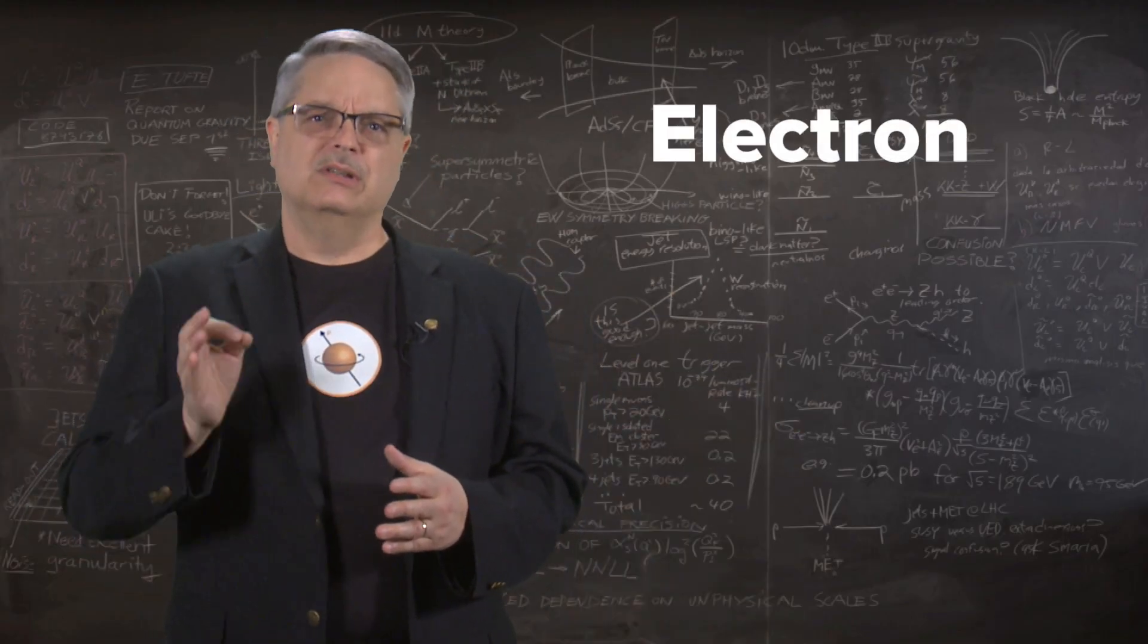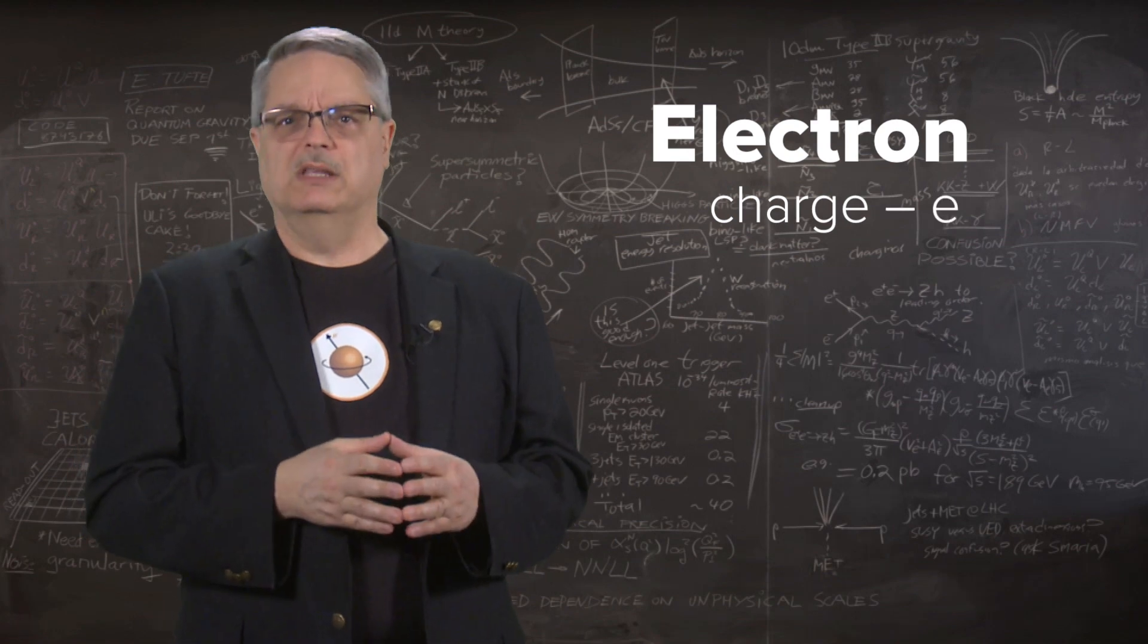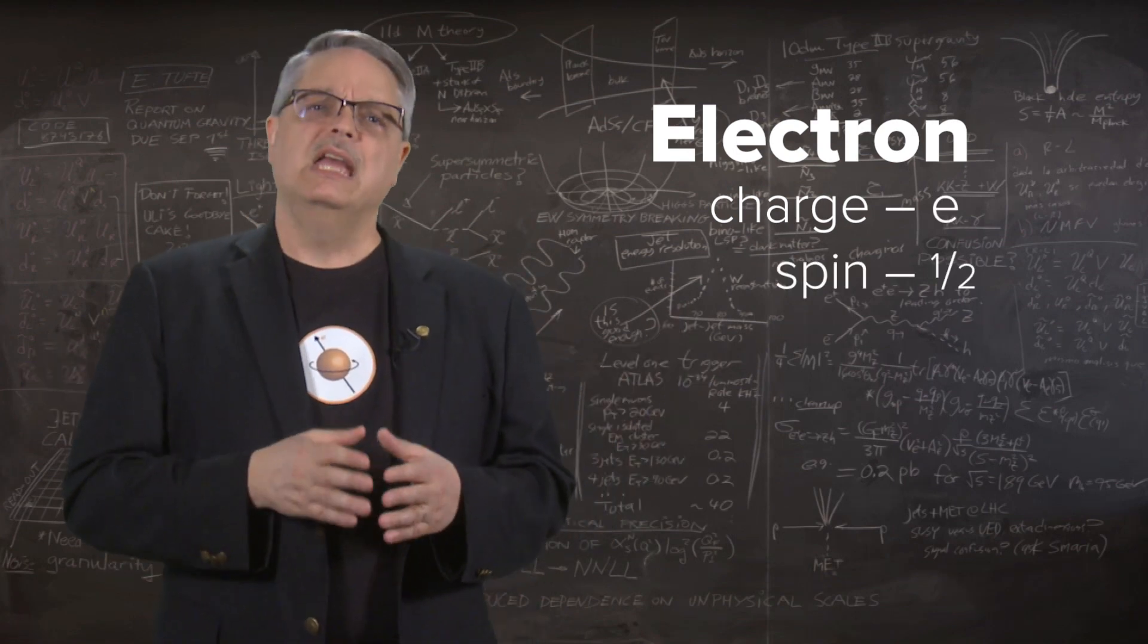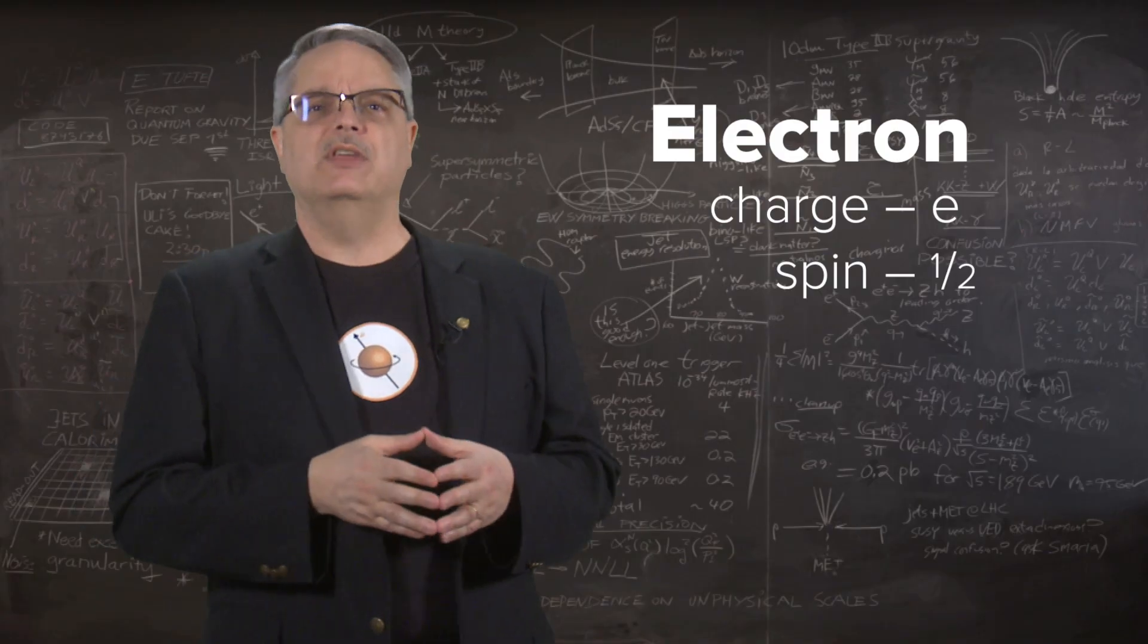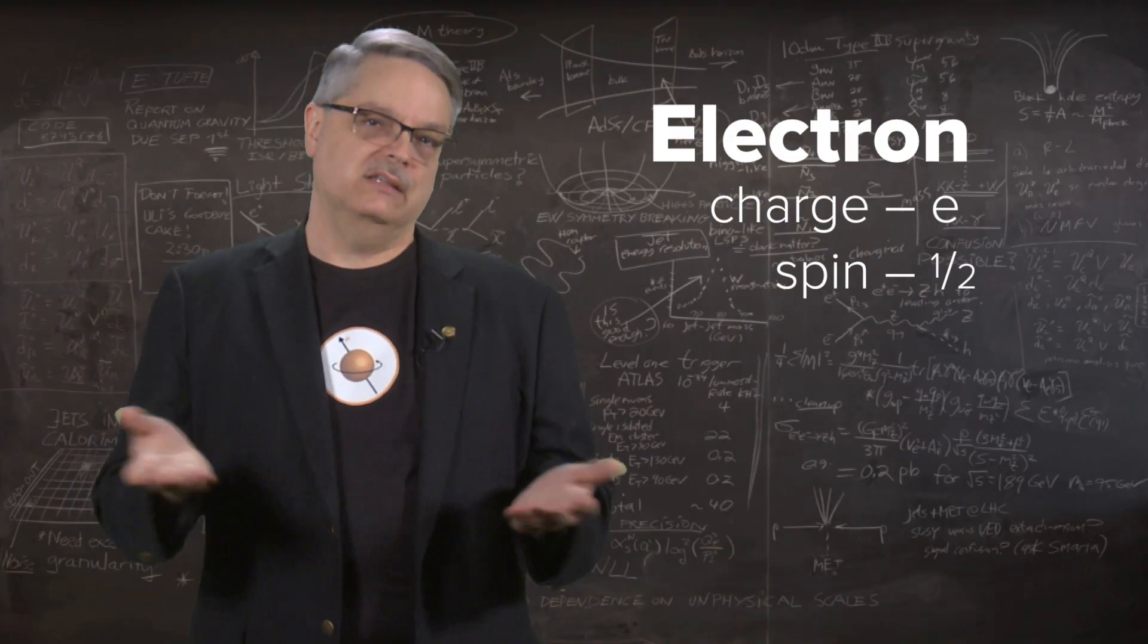The electron has a particular electric charge and a particular spin, which happens to be a half, and using straightforward traditional electromagnetic theory, you can calculate how strong a magnet it should be.